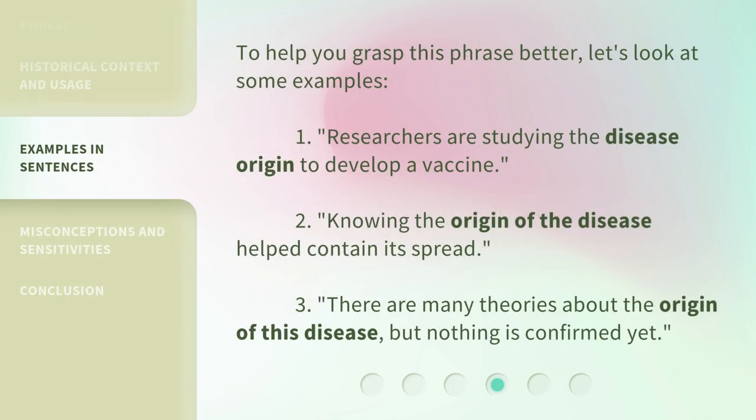To help you grasp this phrase better, let's look at some examples. One: researchers are studying the disease origin to develop a vaccine. Two: knowing the origin of the disease helped contain its spread. Three: there are many theories about the origin of this disease, but nothing is confirmed yet.